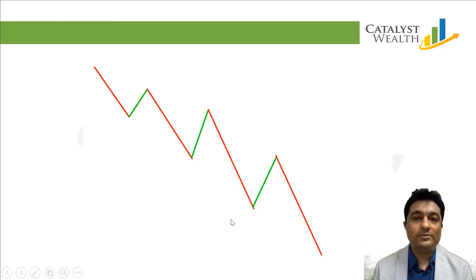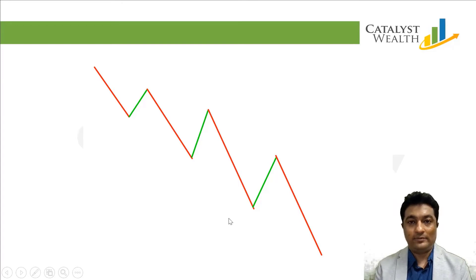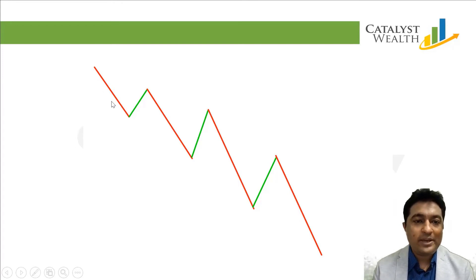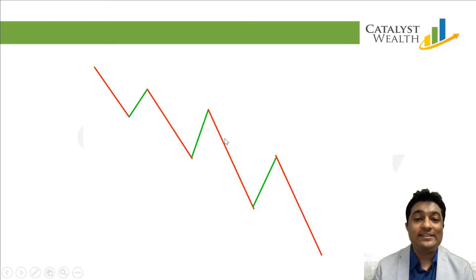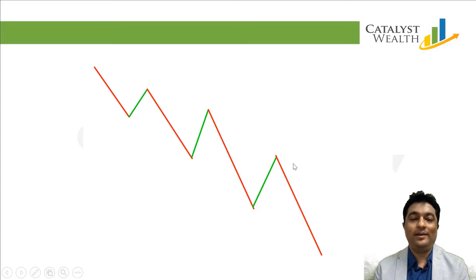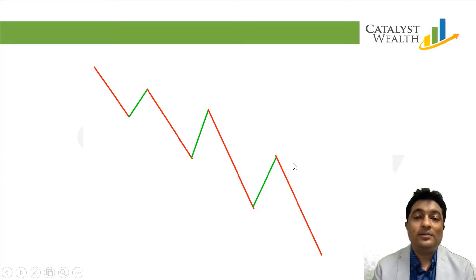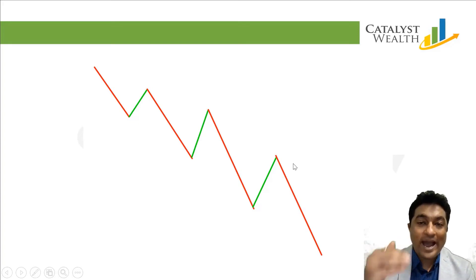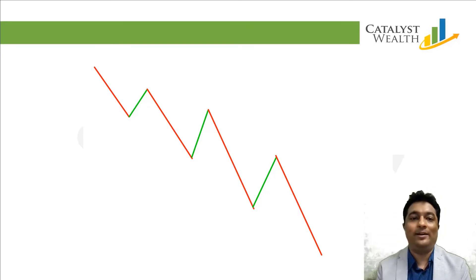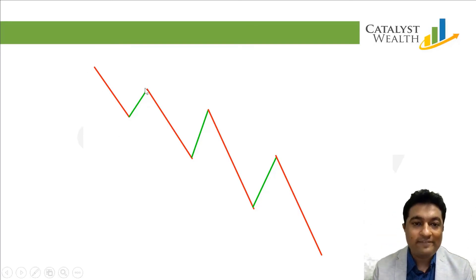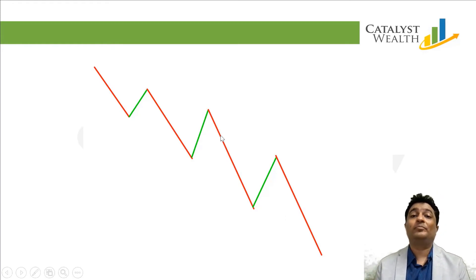Now if you look at this, it is making lower tops and lower bottoms — so this is a downtrend. Every time it crashes and rallies, then crashes more, rallies, crashes more. The saying is: just like you buy on dips in an uptrend, you sell on a rally in a downtrend — rally, you sell.